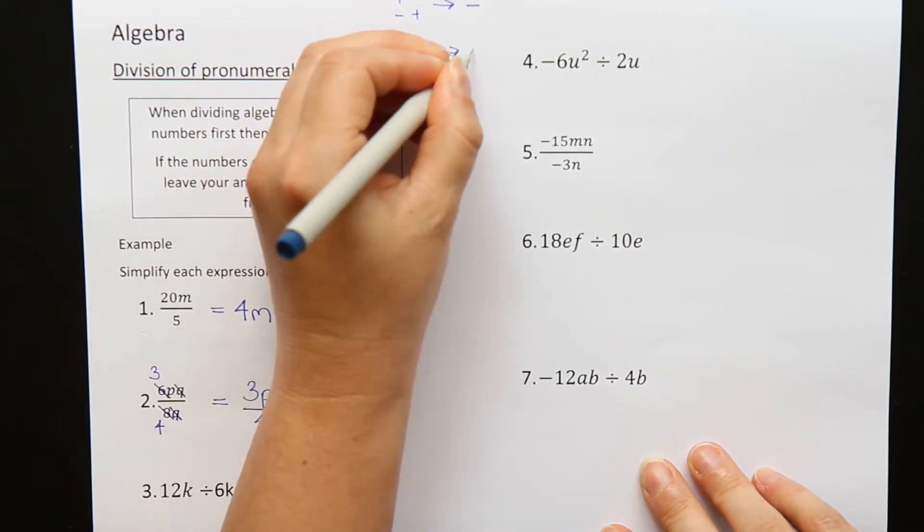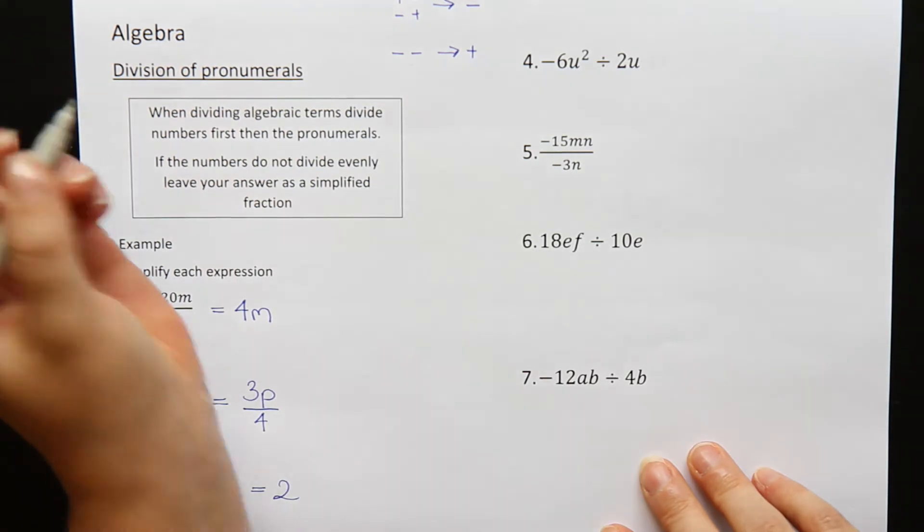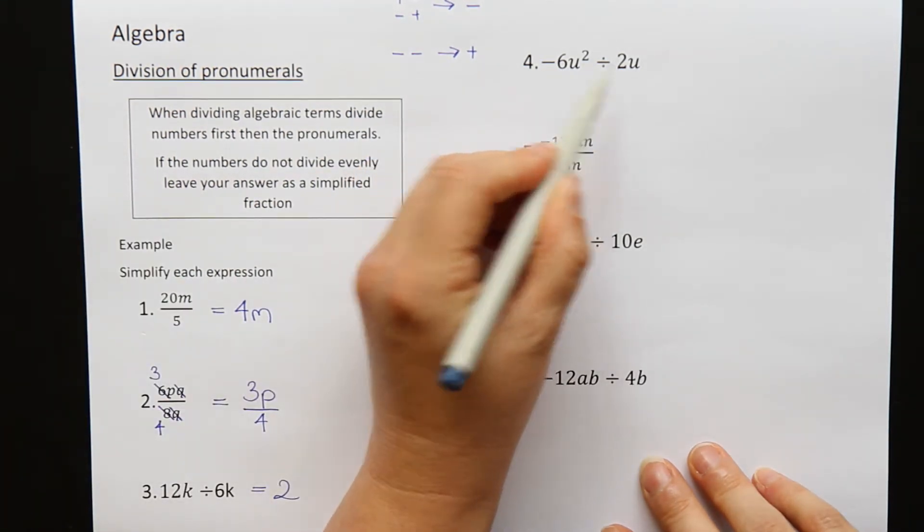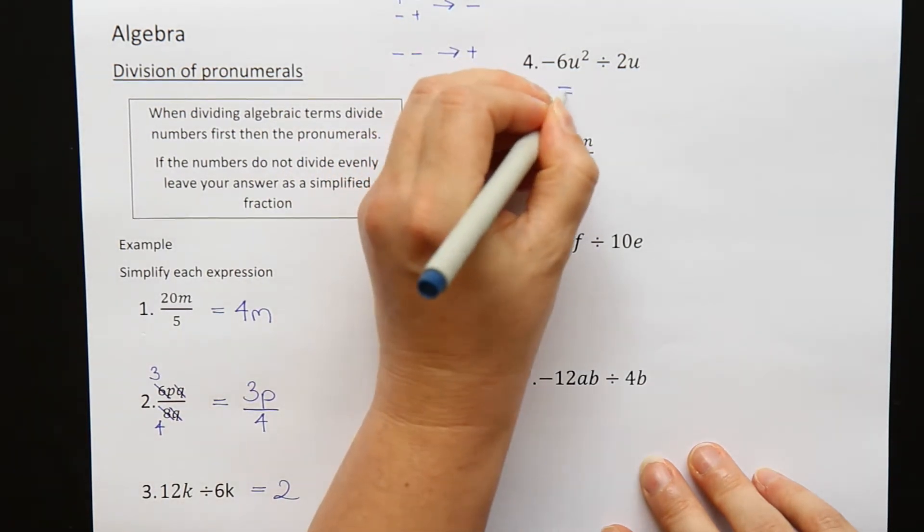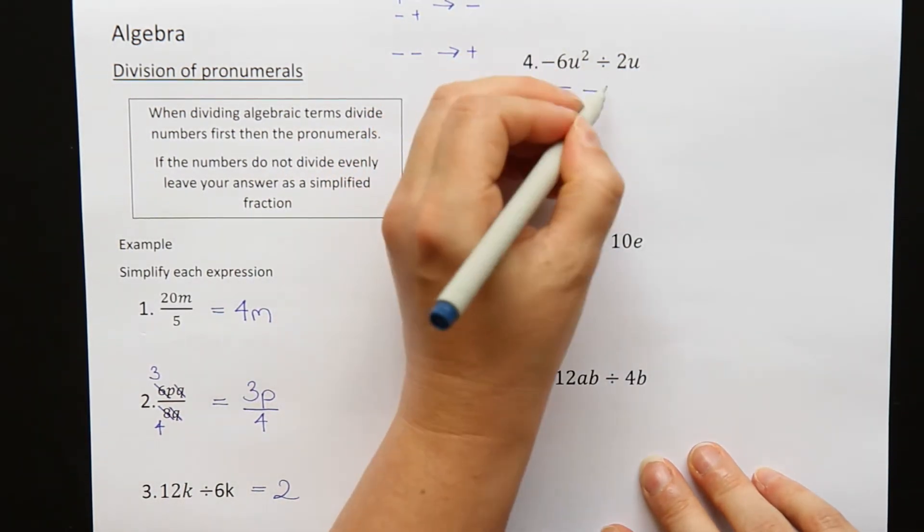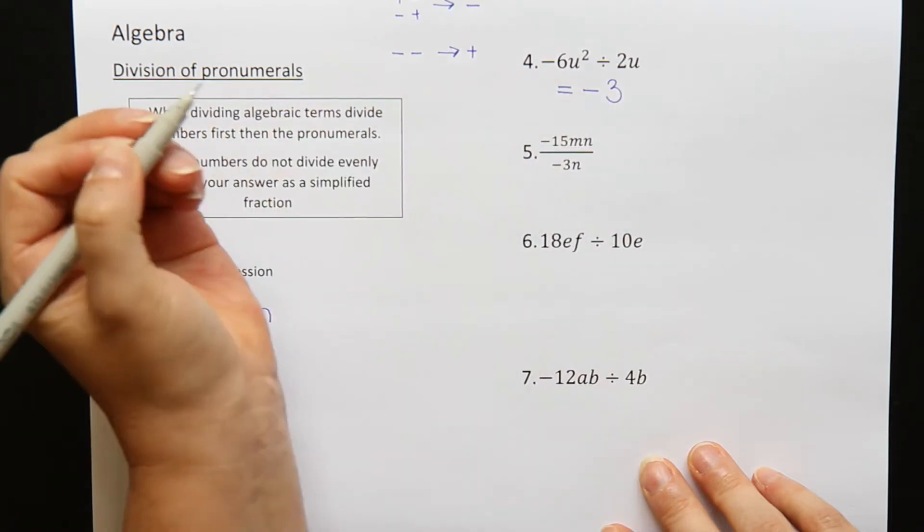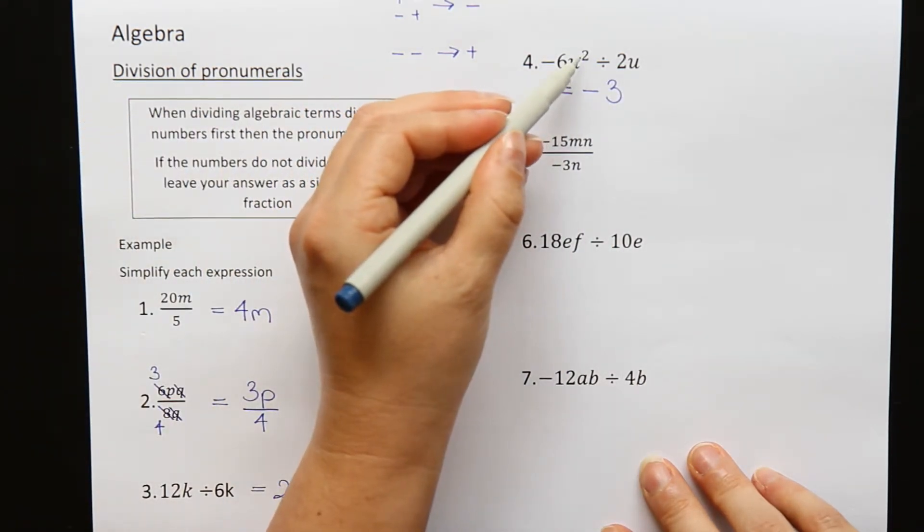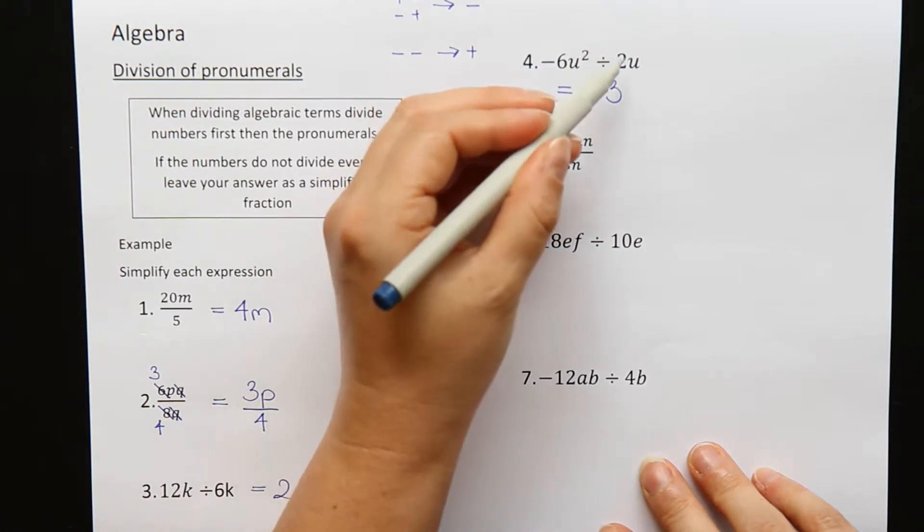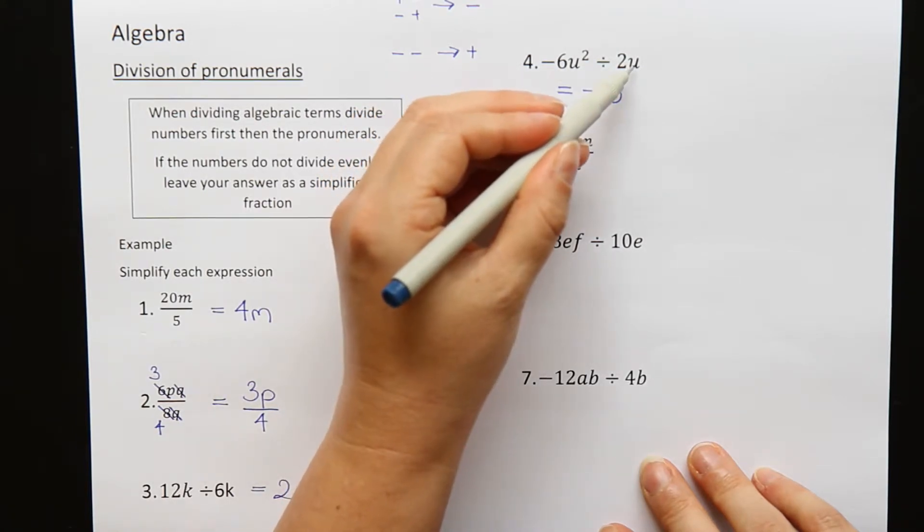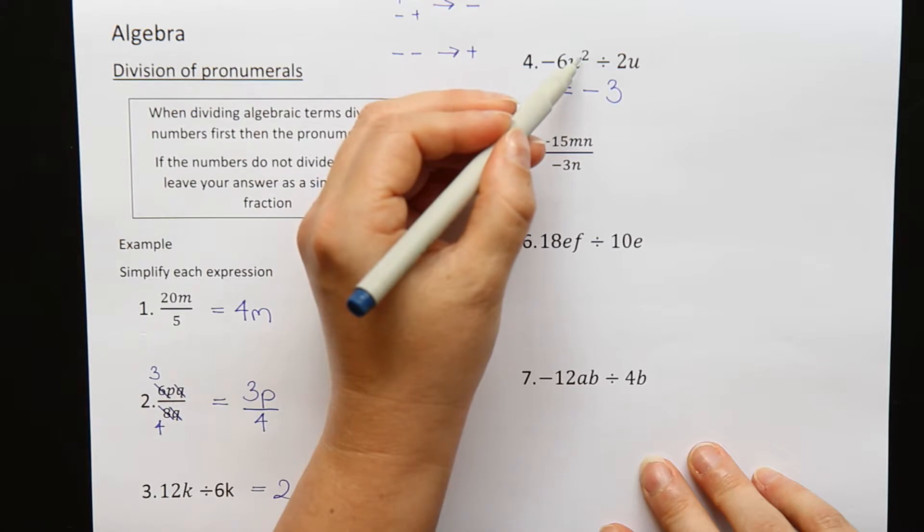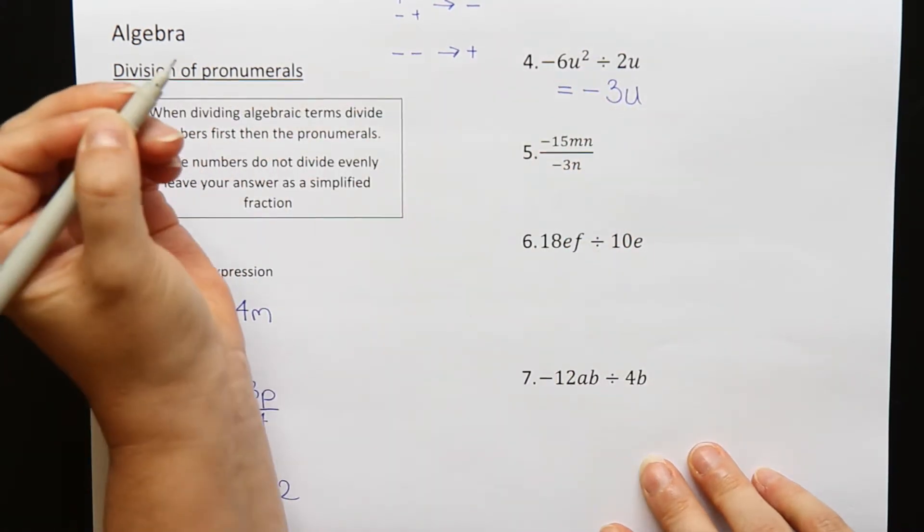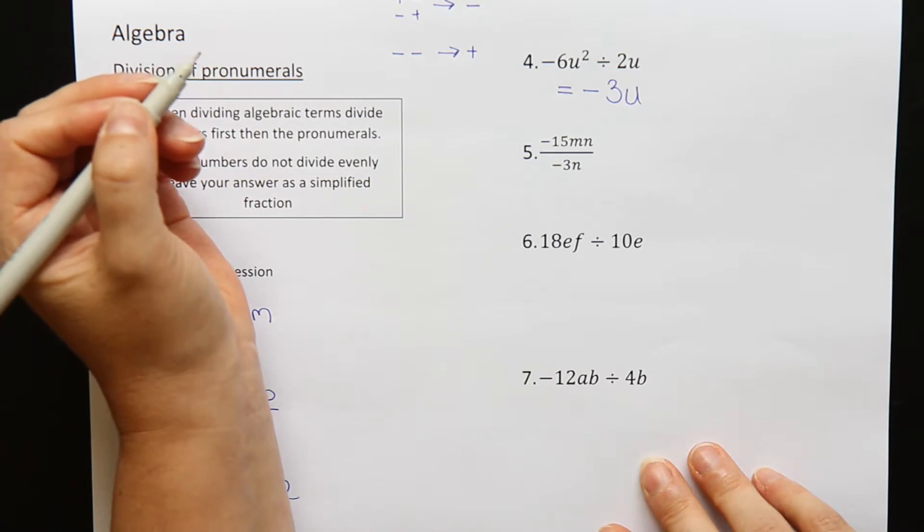So I have got a negative number and a positive number. So I will get a negative. 6 divided by 2 is 3. Now, u squared, that's like having u times u, divide by u. This u will cancel one of those ones out, and I will only have one left. So minus 3u is the answer.